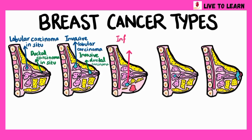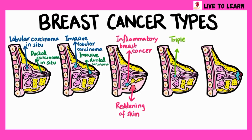Inflammatory breast cancer is a rare, fast-growing cancer which looks like a rash on the breast. Triple negative breast cancer is a type that doesn't have any of the receptors commonly found in breast cancer. Paget's disease of the breast involves eczema-like changes to the skin of the nipple and areola.